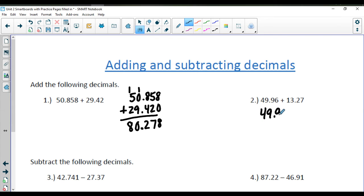In this one, 49.96 plus 13.27. 6 plus 7 is 13. Carry your 1. It's going to be a 12. Carry your 1. That'll be a 13. And 4 plus 2 is 6. Don't forget your decimal point in there.